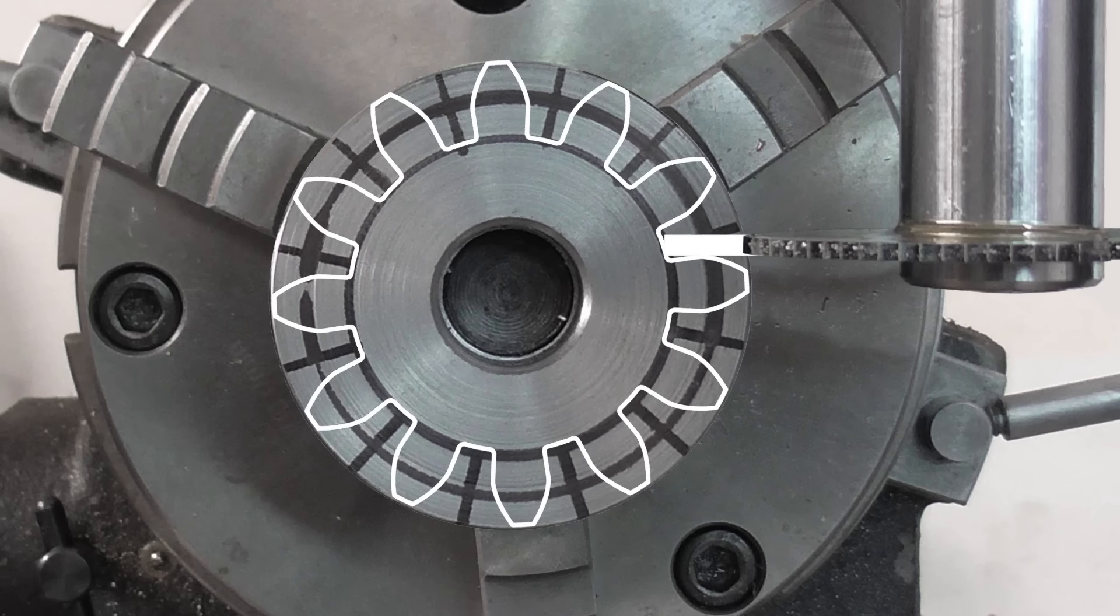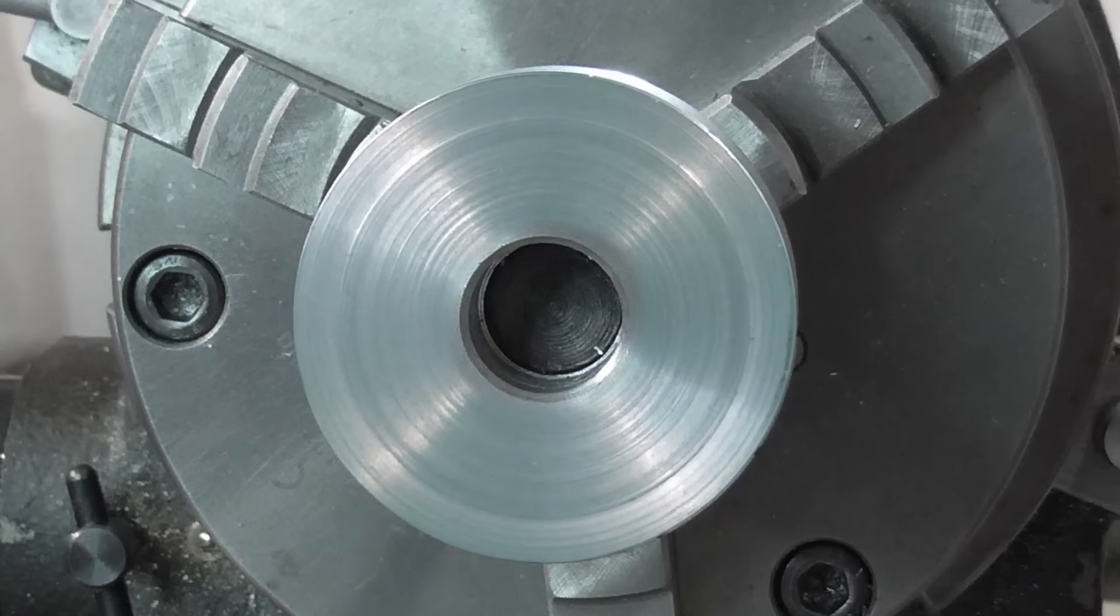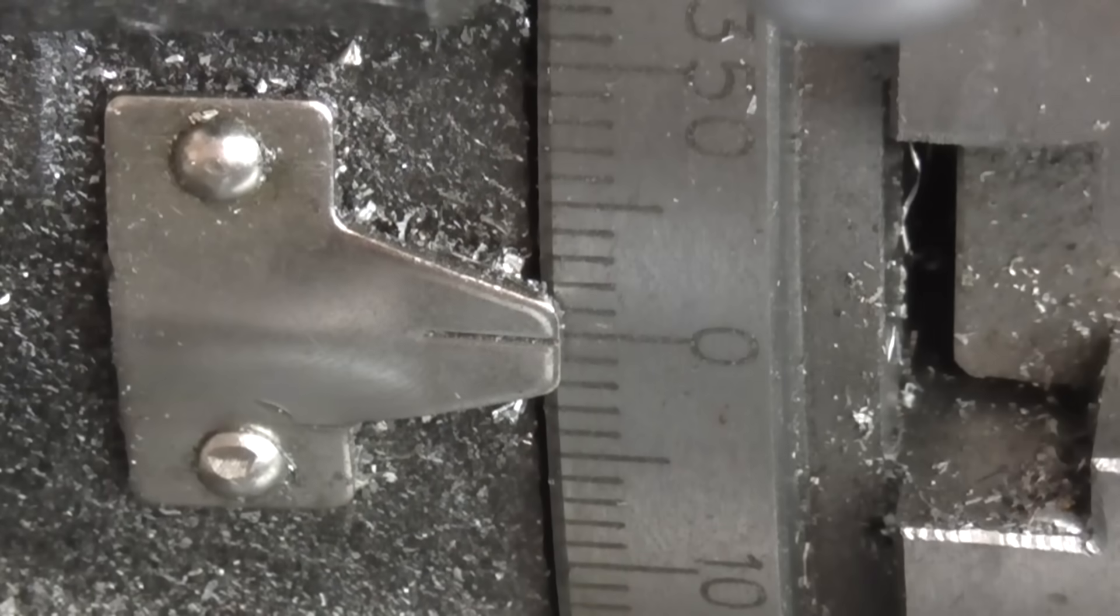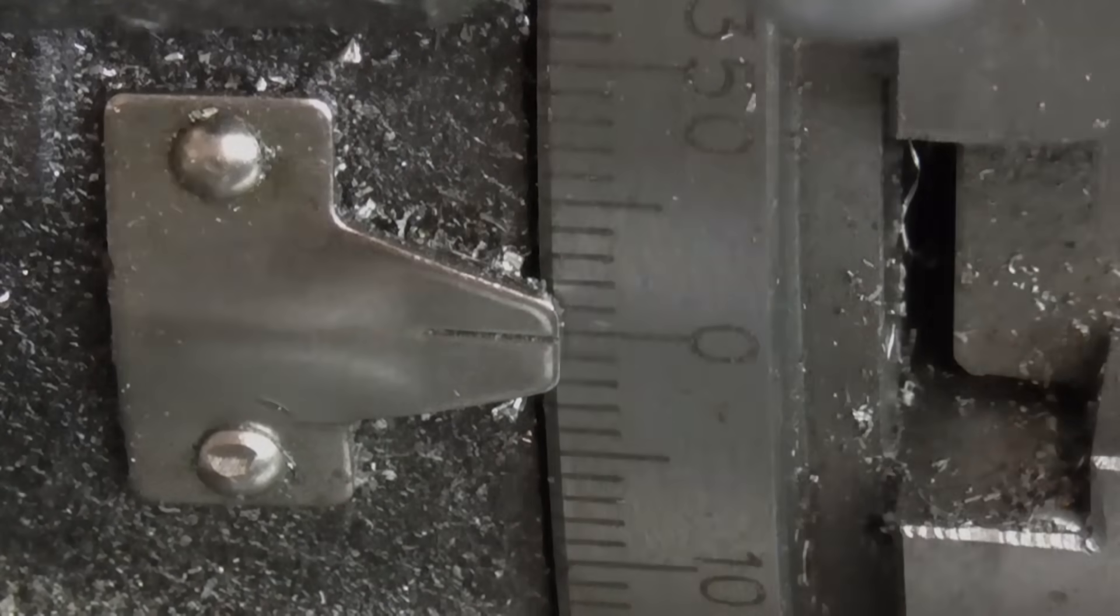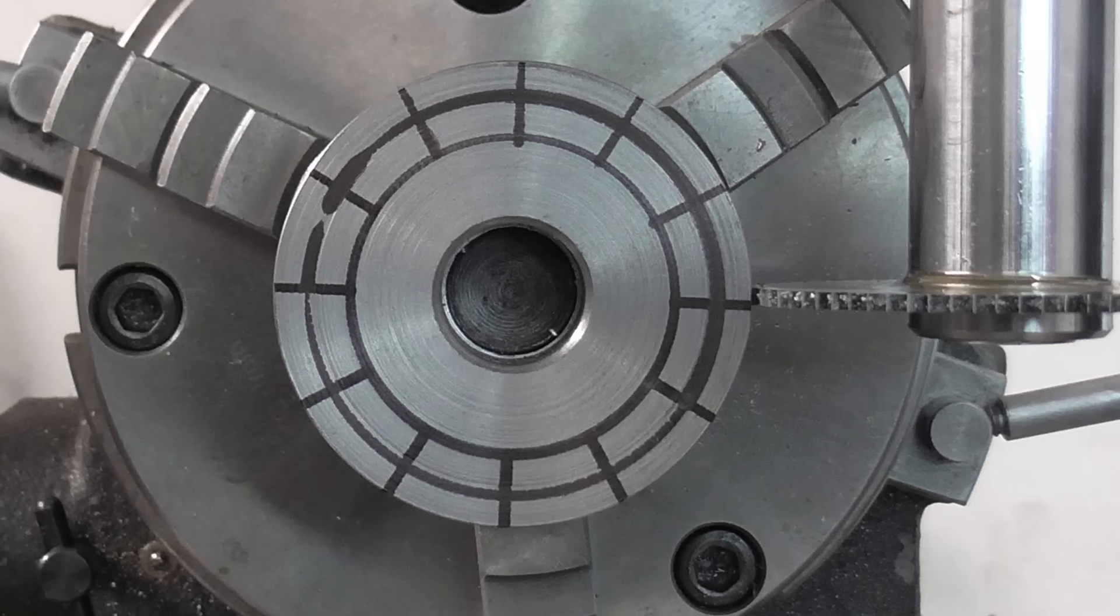But since I haven't taken any cuts yet, I don't actually need to rotate the blank to take the first cut. I can just leave the table at zero, which will make indexing each tooth easier, as I won't have to add in a 20 degree offset. All I need to do is reposition the saw to take the first cut, and I can do that with trigonometry.